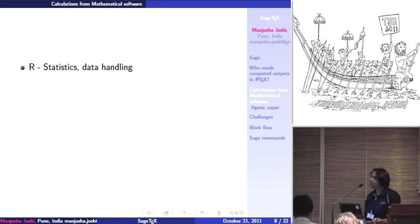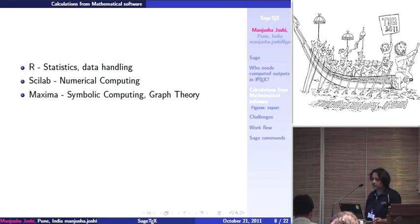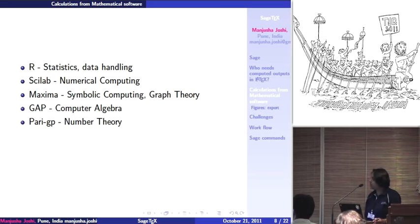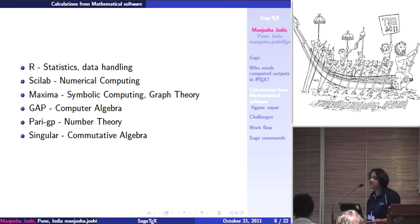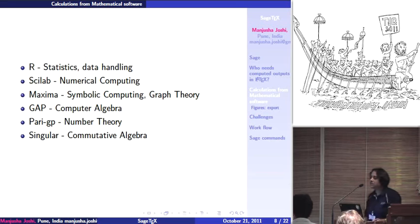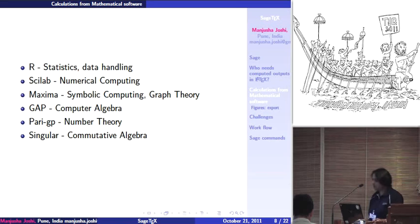Not only that, the software required — like for statistics, data handling, numerical computing, symbolic computing, graph theory, computer algebra, number theory, commutative algebra — all this one can handle easily through SAGE. Therefore SAGE is called a math server, because this list generally includes all types of mathematical computation requirements covered in this set of software, and SAGE can handle all this software through itself.